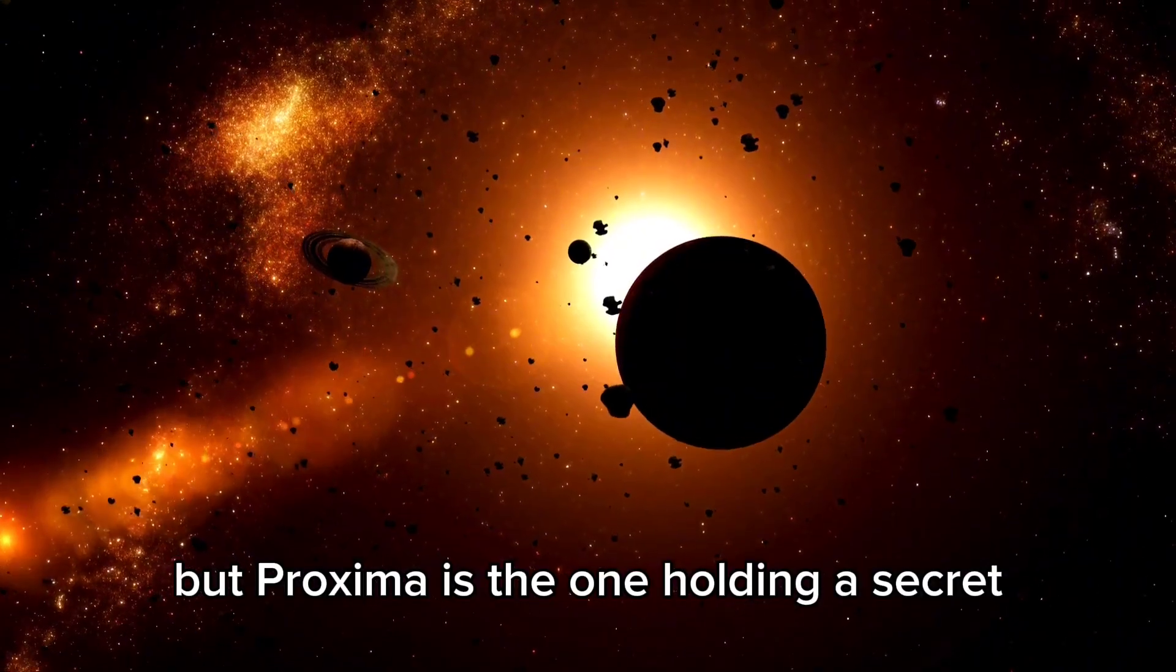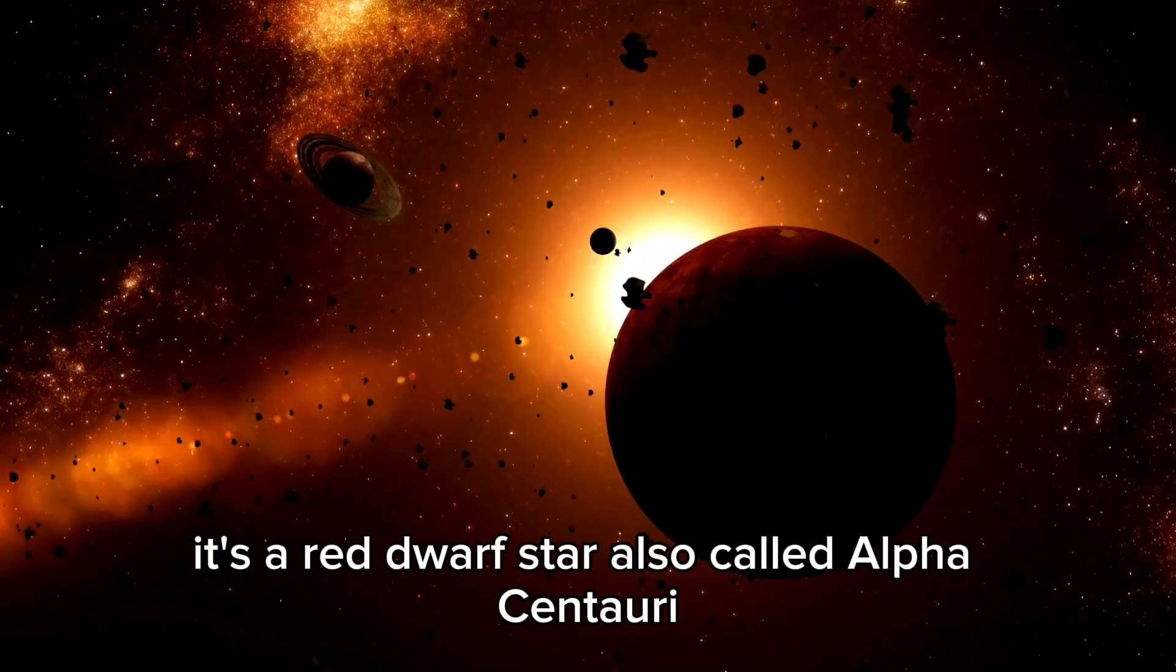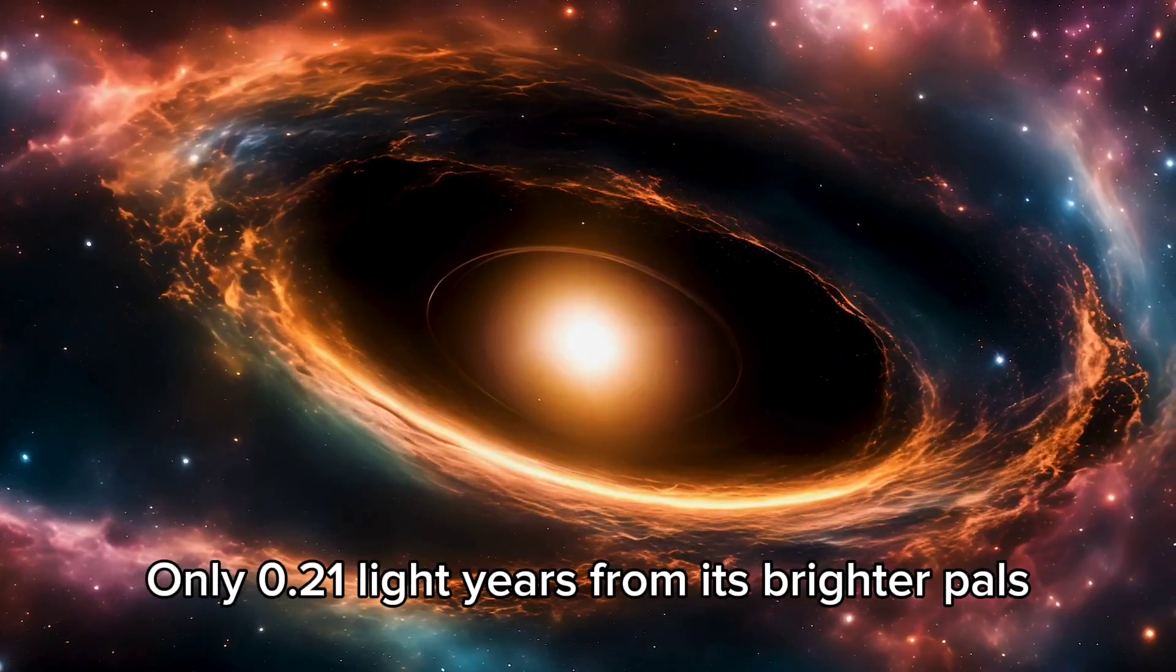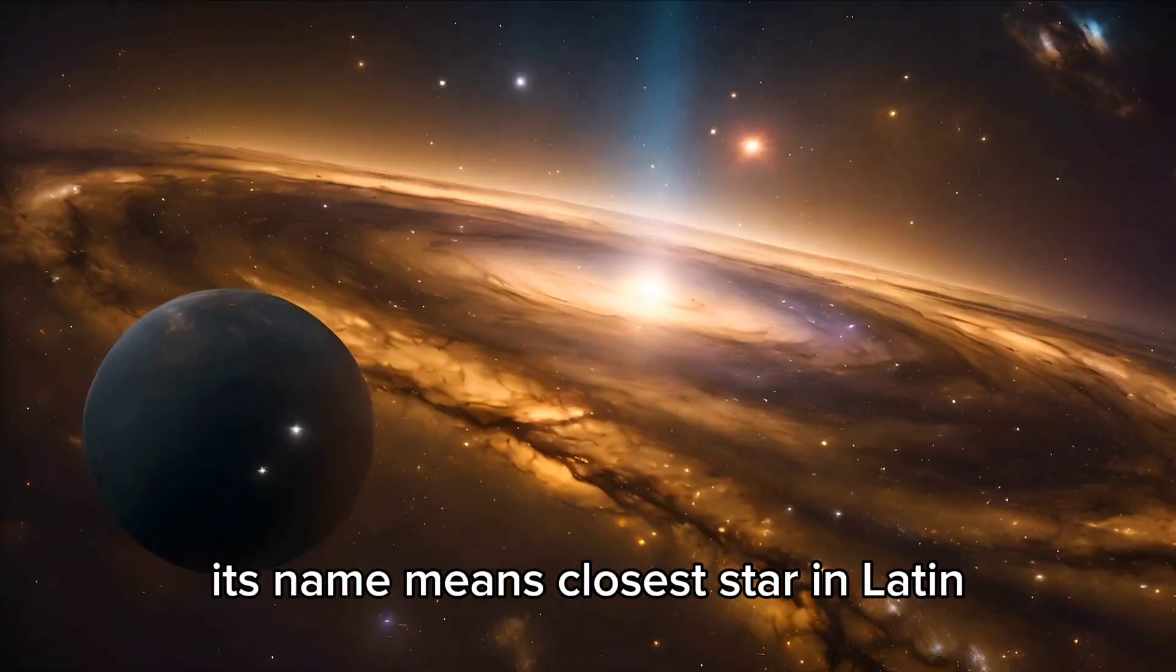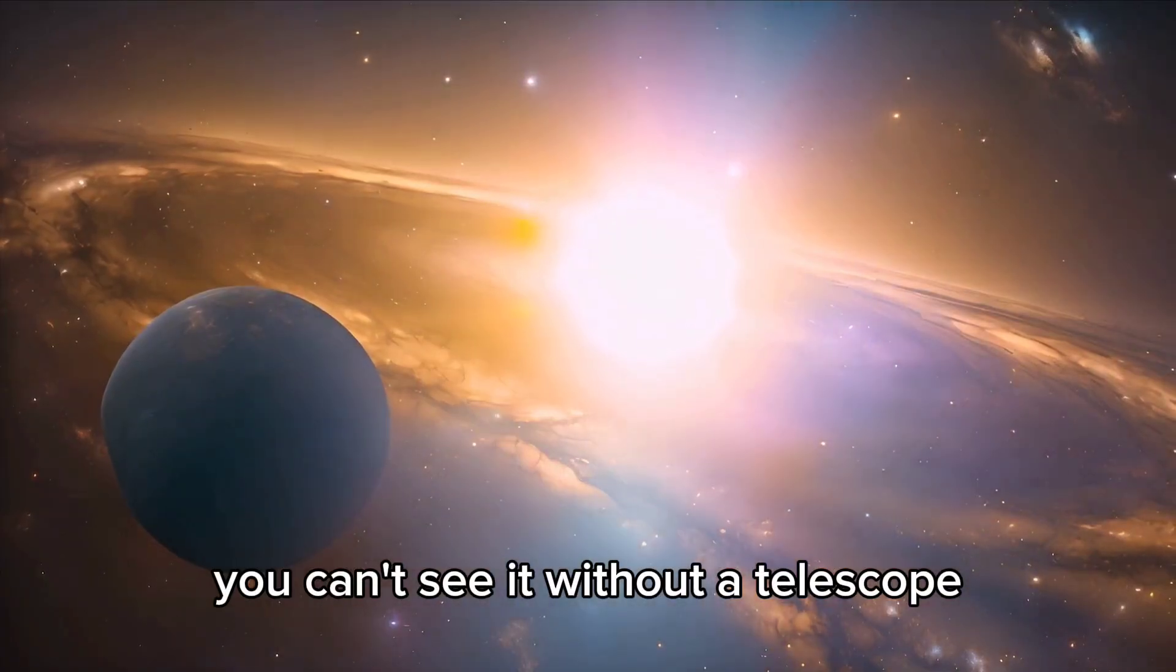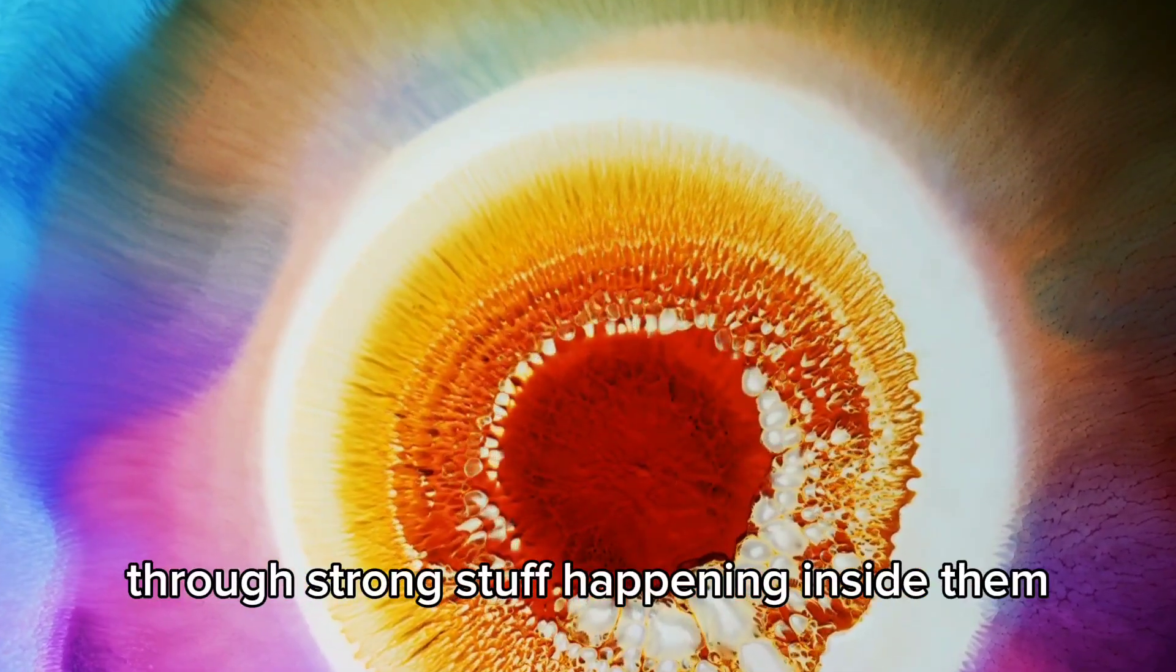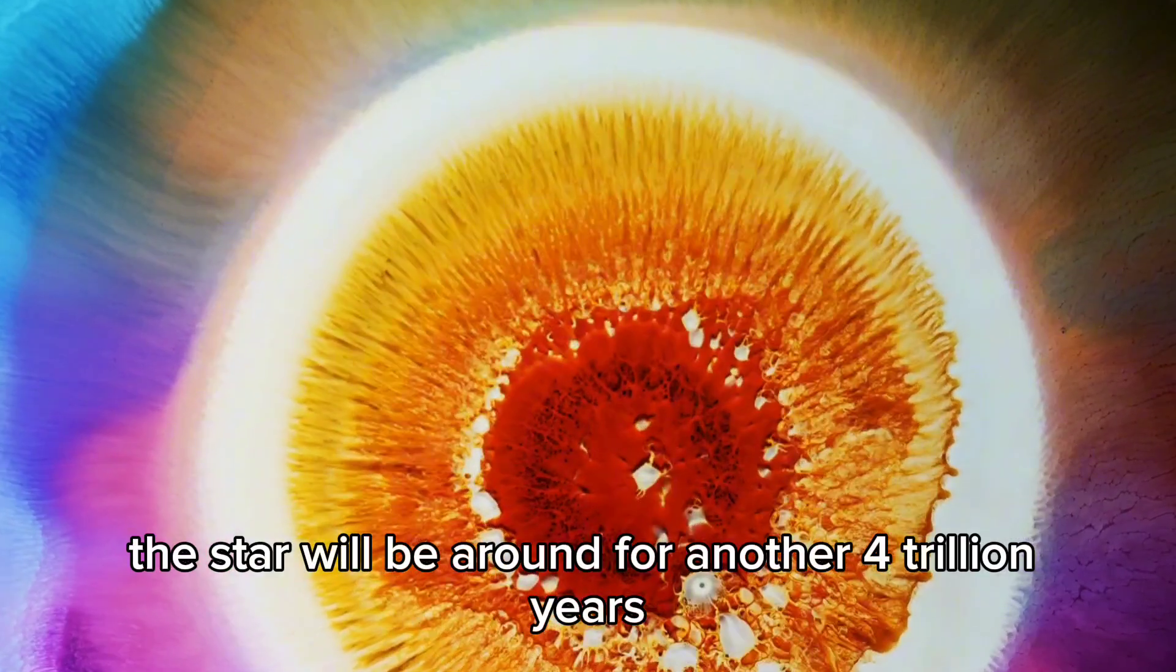But Proxima is the one holding a secret. It's a red dwarf star, also called Alpha Centauri, only 0.21 light-years from its brighter pals. Its name means closest star in Latin. Even though it's close, you can't see it without a telescope. Red dwarf stars make energy through strong reactions inside them. This star will be around for another 4 trillion years.